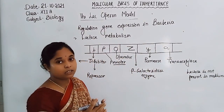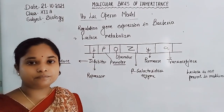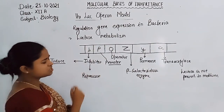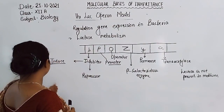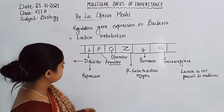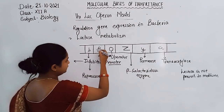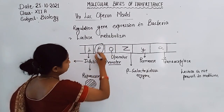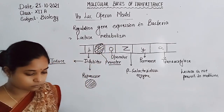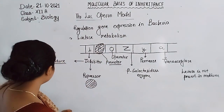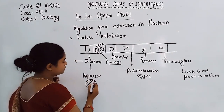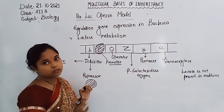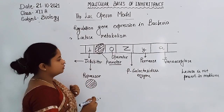If lactose is not present in the medium, there is no need for the synthesis of such enzymes. Due to this reason, the repressor binds with the promoter region. There is no need for gene expression or formation of these enzymes because lactose is not present in the medium. Such type of regulation is known as negative regulation of gene.